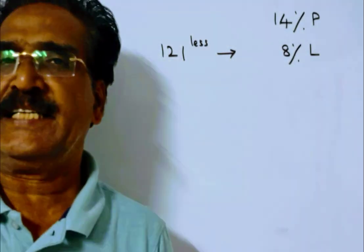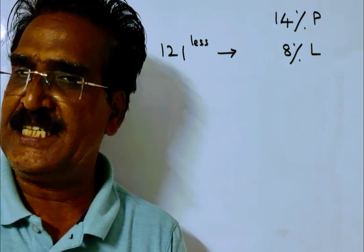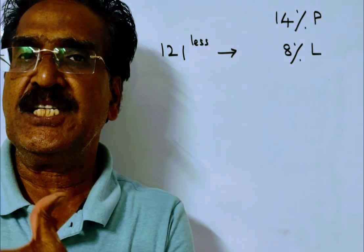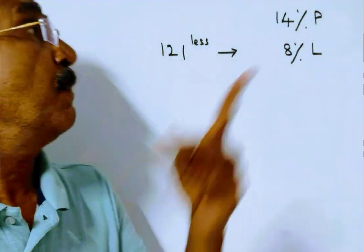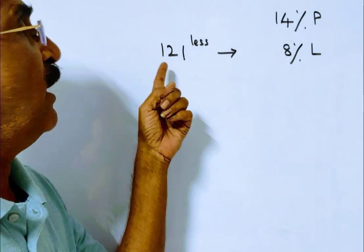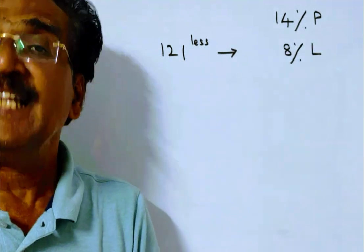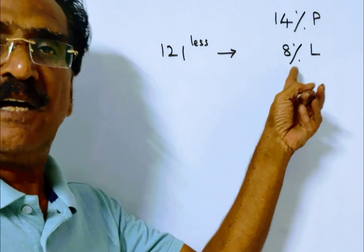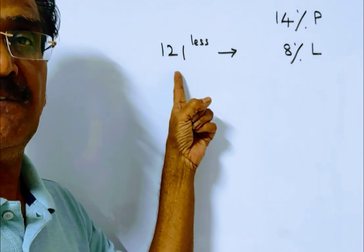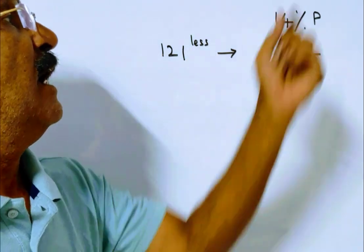Hi friends, good morning. Please look at the next problem in profit and loss. The problem is given in the description box. An article is sold at a profit of 14 percent. If it is sold at 121 rupees less, there will be a loss of 8 percent.